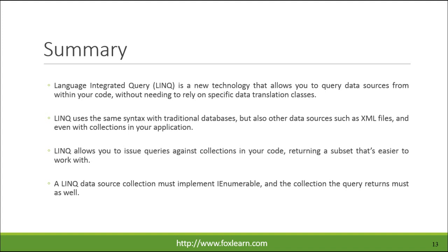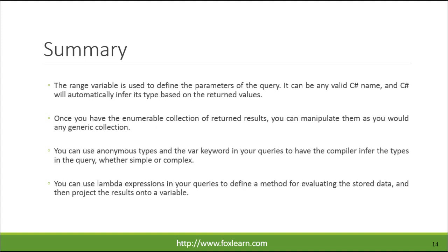A LINQ data source collection must implement IEnumerable, and the collection the query returns must as well. The range variable is used to define the parameters of the query — it can be any valid C# name, and C# will automatically infer its type based on the returned values. Once you have the enumerable collection of returned results, you can manipulate them as you would any generic collection.